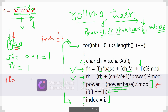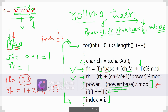For 'b', reverse hashing: RH = 1 + 2 * 31 = 1 + 62 = 63. So FH = 33 and RH = 63 — they are different, confirming 'ab' is not a palindromic prefix. Power updates to 31 * 31 = 31².